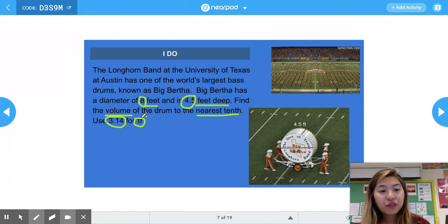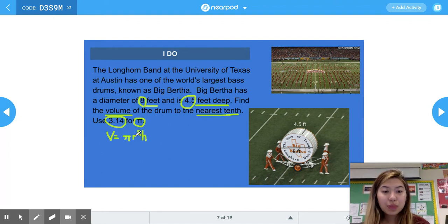The first thing I'm going to do is write out my volume equation for cylinders, which is V = πr²h. πr² is basically the area of the circle or the base, and then height is, in this case, the depth of the bass drum.